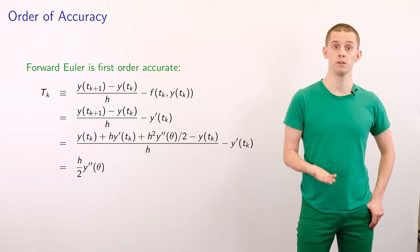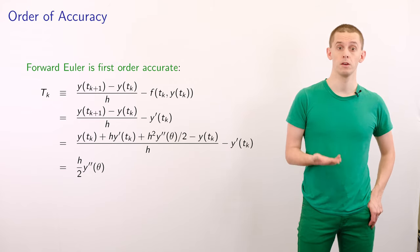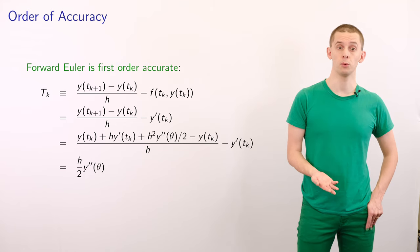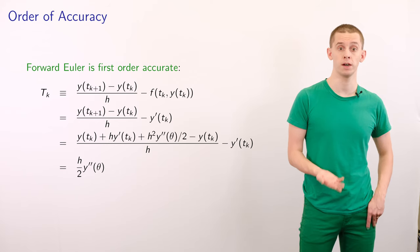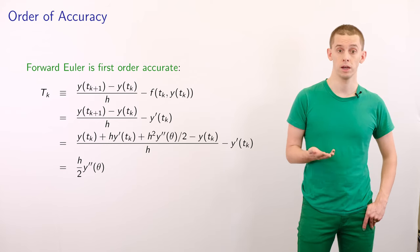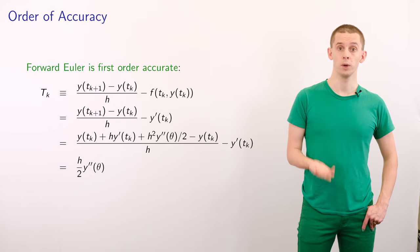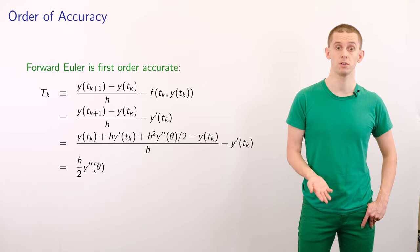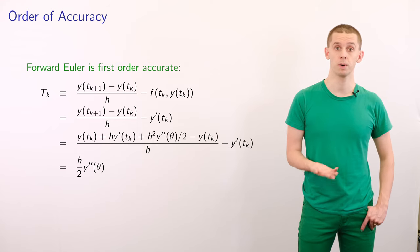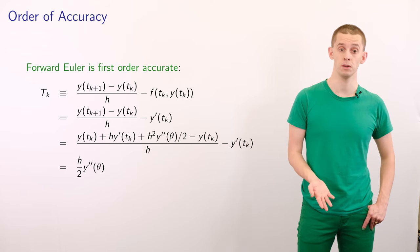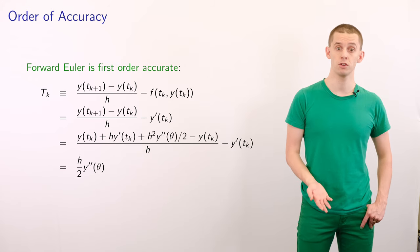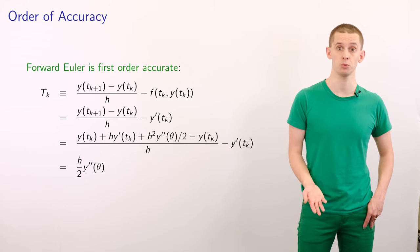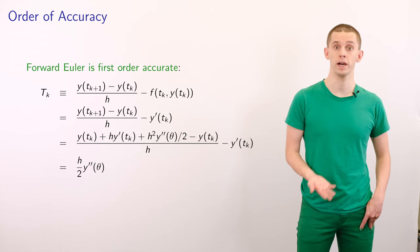Now let's evaluate the order of accuracy of the methods we introduced. Forward Euler is first-order accurate. The truncation error T_k equals y(t_{k+1}) − y(t_k) divided by h, minus f(t_k, y(t_k)). Using our ODE we write this as y(t_{k+1}) − y(t_k) divided by h, minus y′(t_k). Expanding y(t_{k+1}) using Taylor's theorem gives h/2 · y″(θ) for some θ between t_k and t_{k+1}. Therefore this is O(h), confirming a first-order method.